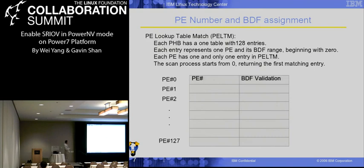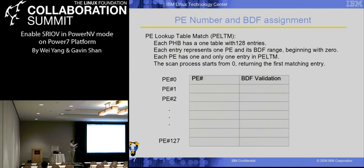The first table is called the PELTM, the PE Lookup Table Match. Each PHB has a table with size 128, and each entry represents one PE and its corresponding BDF range. Each PE has one and only one entry in the PELTM, meaning it's a one-to-one map. When an error happens, the system gets a BDF number and hardware does a scan from top to bottom. The first entry that matches the BDF range returns the corresponding PE number, so the system knows which PE is in an error state.